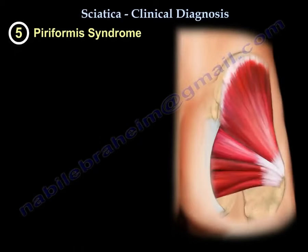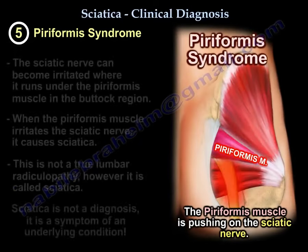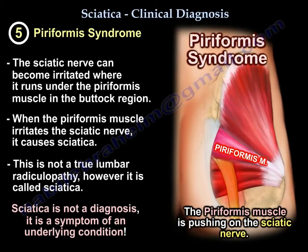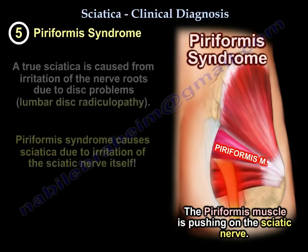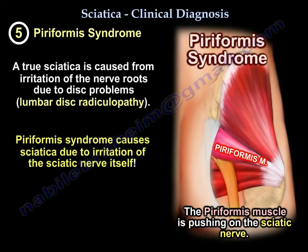Number five is piriformis syndrome. The sciatic nerve can be irritated as it runs under the piriformis muscle in the buttock. If this muscle irritates the nerve, it causes sciatica. This is not a true lumbar radiculopathy, but it is called sciatica. A true sciatica from irritation of the nerve roots by disc problems is called lumbar radiculopathy or disc herniation. Piriformis syndrome causes sciatica due to irritation of the sciatic nerve itself.